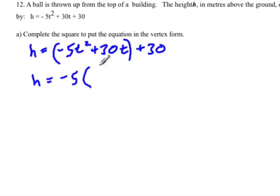And negative 5t squared divided by negative 5 is t squared. And positive 30t divided by negative 5 is minus 6t.